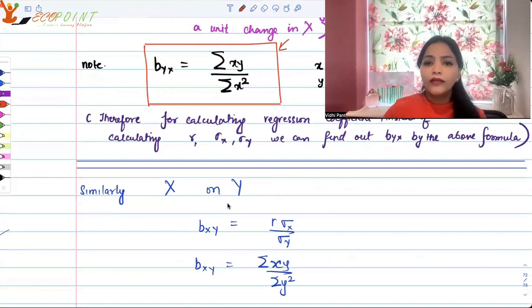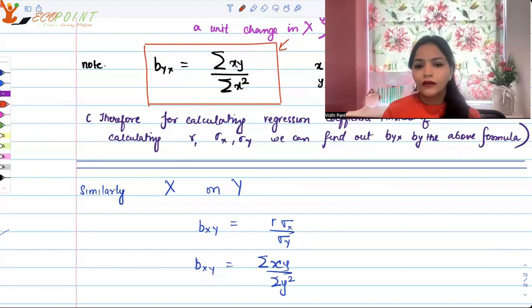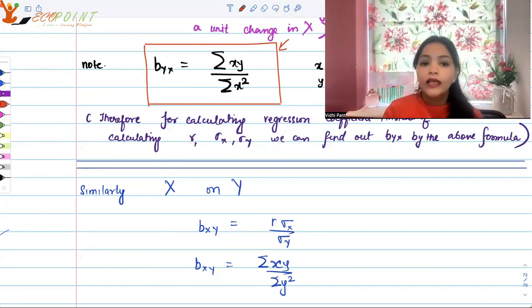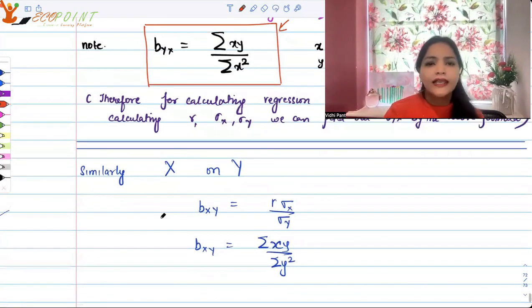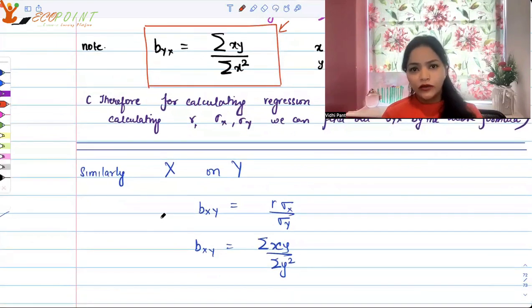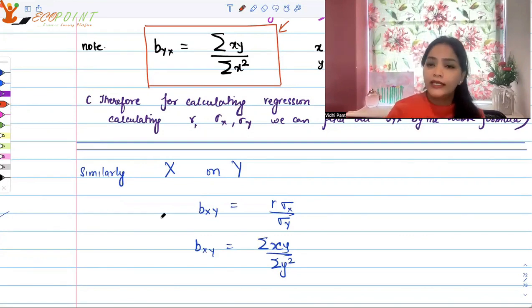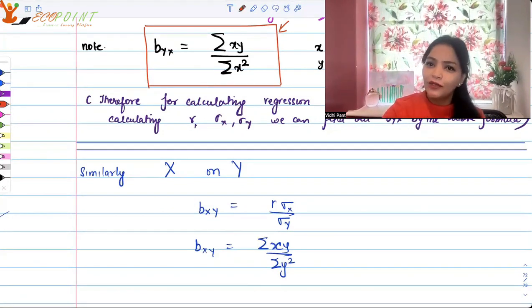Therefore, many times for calculating regression coefficient instead of using correlation coefficient and standard deviations of x and y, we can also use the data set given to you and use this formula. Similarly for x on y, b_xy will be r times sigma x upon sigma y, and it could also be taken as summation xy upon summation y squared. Just as for y on x, similarly for x on y. Using these formulas, any question which comes on regression lines could be dealt with. I hope this will really help you in case you face this kind of question. Thank you very much for watching.